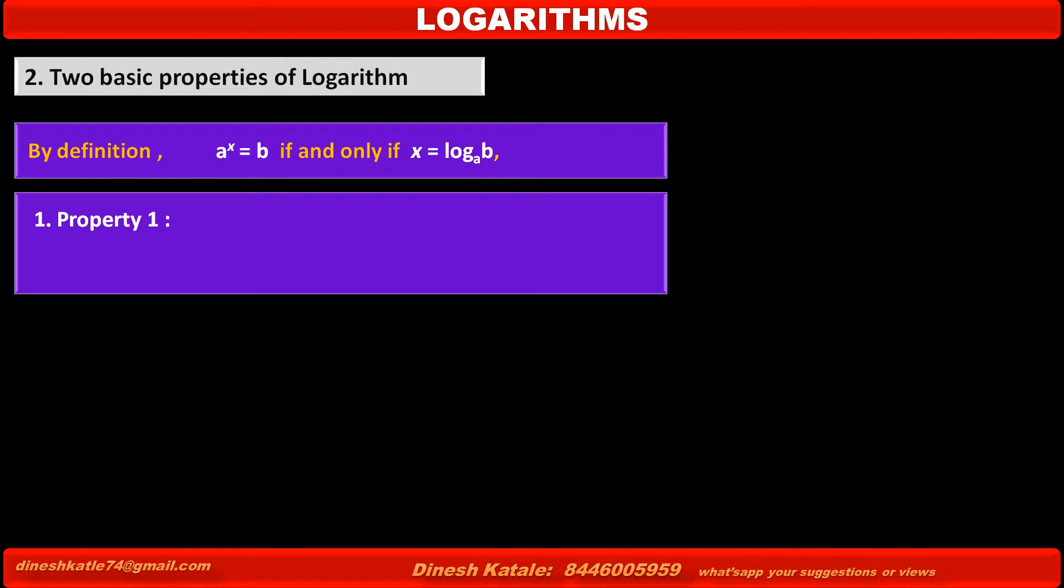By using this fact, we have to learn property number one of logarithm. Consider the statement a raised to 0 is equal to 1. Here a is the base, 0 is the power, and the value of a raised to 0 equals 1. This implies by changing this statement to logarithmic form: 0 equals log of 1 to the base a.